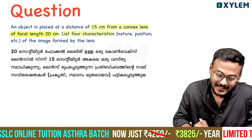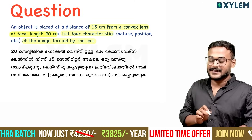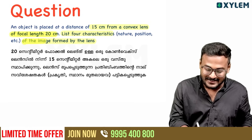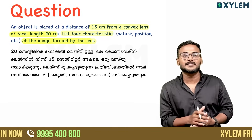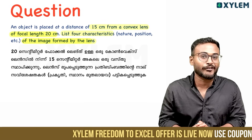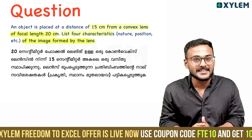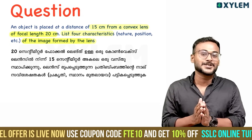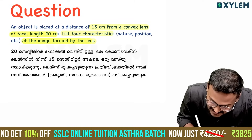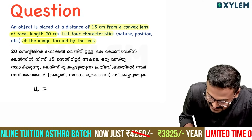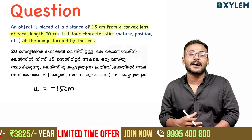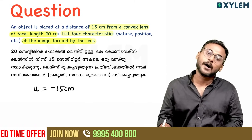List four characteristics of the image formed by the lens. For every lens we have to identify four characteristics: four dimensions, nature, position, etc. The focal length is called focus, the objective distance is called object distance. The object distance u is minus 15 centimeters.